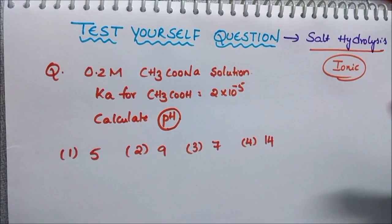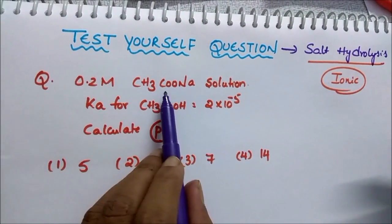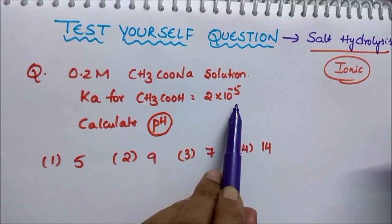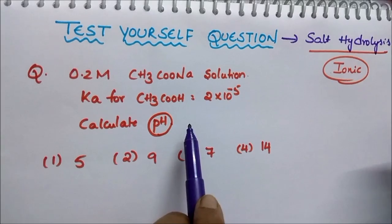In the previous session I gave you the question that 0.2 molar CH3COONa solution is there and for that Ka value is 2 into 10 power of minus 5, you have to calculate pH.